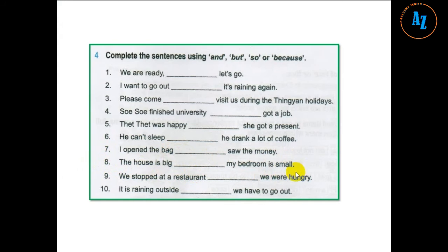Number five: That Thet was happy blank she got a present. Number six: He can't sleep blank he drank a lot of coffee. Number seven: I opened the bag blank saw the money. Number eight: The house is big blank my bedroom is small. Number nine: We stopped at the restaurant blank we were hungry. Number ten: It is raining outside blank we have to go out.